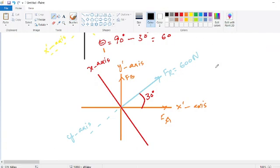For F of A we can say this is 600 and cos of 30 degrees. For F of B we can say 600 and this will be sin 30 degrees.